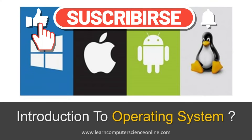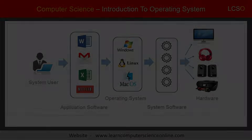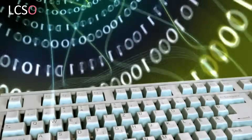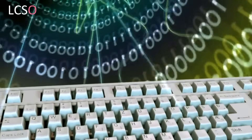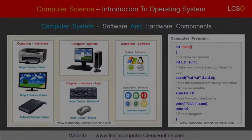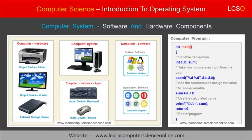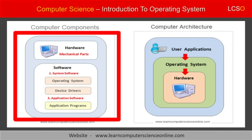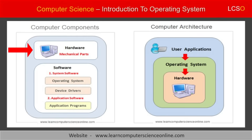After this brief introduction, let us now dive a bit deeper to understand what is an operating system and its importance in computer architecture and organization. In computer architecture, the computer system basically consists of two types of components: first, the hardware components, and second, the software components.